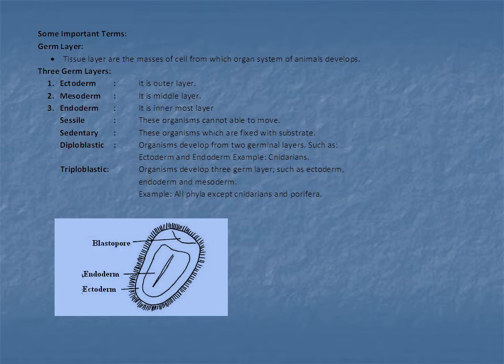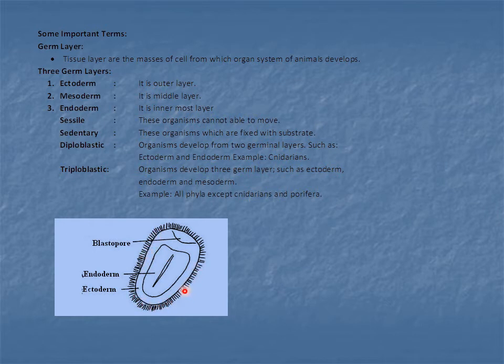Some important terms: germ layers are tissue layers — masses of cells from which organ systems of animals develop. There are three germ layers: ectoderm, mesoderm, and endoderm. Ectoderm is the outer layer of the animal body. Mesoderm is the middle layer. Endoderm — endo means inner — is the innermost layer of the body. In the figure shown, ectoderm is the outer layer, endoderm is the inner layer, and the opening is known as the blastopore.